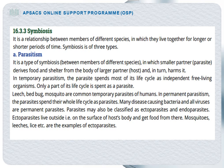There are two types of parasitism: temporary parasitism and permanent parasitism. In temporary parasitism, the parasite spends most of its life as an independent free-living organism but completes only part of its life cycle on the body of the host. Examples include leech, bat bugs, and mosquito. In permanent parasitism, the parasite spends most of its life as a parasite. Examples are disease-causing bacteria and viruses.